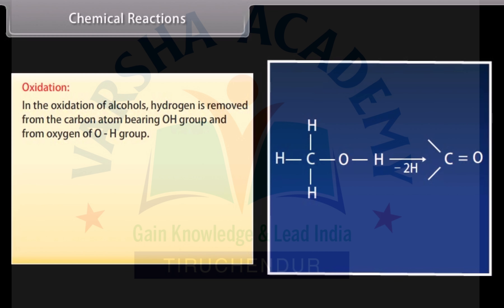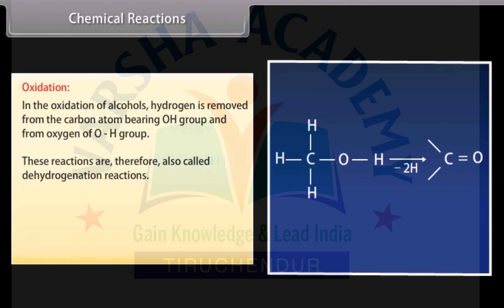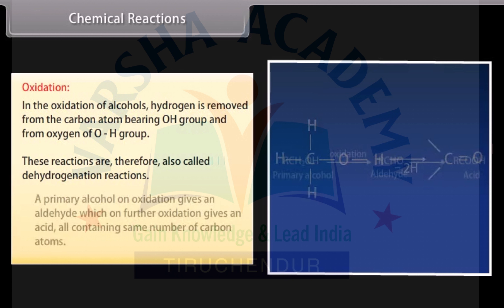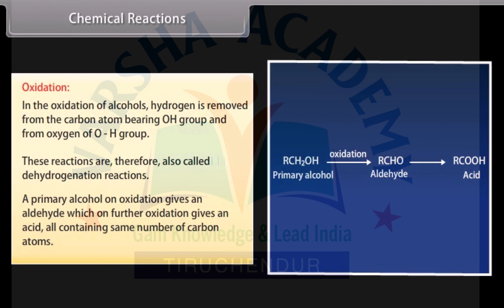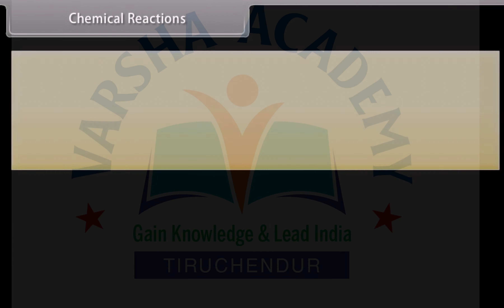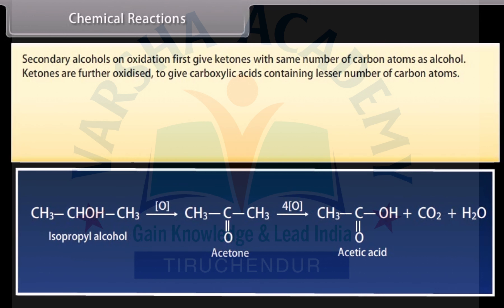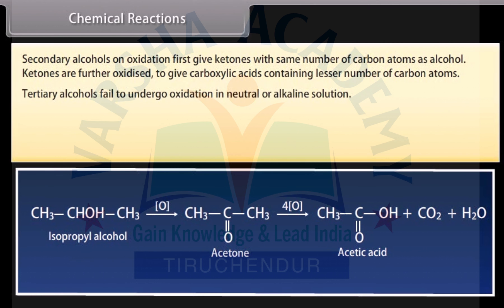In the oxidation of alcohols, hydrogen is removed from the carbon atom bearing the OH group and from the oxygen of the OH group; these reactions are therefore also called dehydrogenation reactions. A primary alcohol on oxidation gives an aldehyde, which on further oxidation gives an acid, all containing the same number of carbon atoms. Secondary alcohols on oxidation first give ketones with the same number of carbon atoms. Ketones are further oxidized to give carboxylic acids containing a lesser number of carbon atoms. Tertiary alcohols fail to undergo oxidation in neutral or alkaline solution.